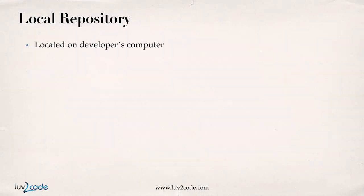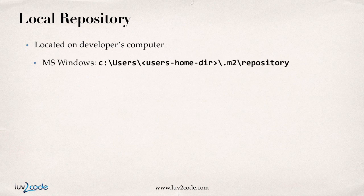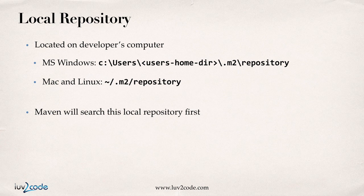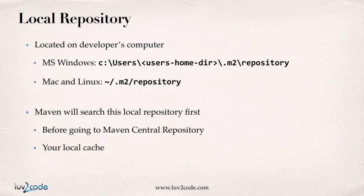The local repository is located on the developer's computer. If you're using Microsoft Windows, it's in C:\Users\{user home directory}\.m2\repository. If you're using Mac or Linux, then it's in the user's home directory, slash .m2 slash repository. Maven will search this local repository first before going out to the Maven central repository on the web. You can think of your local repository like your local cache.